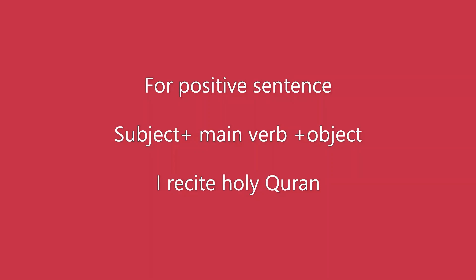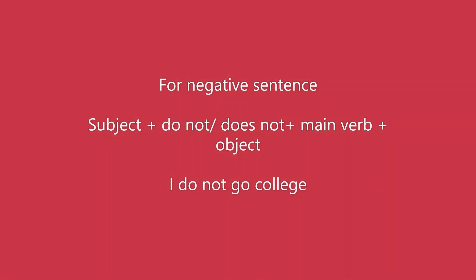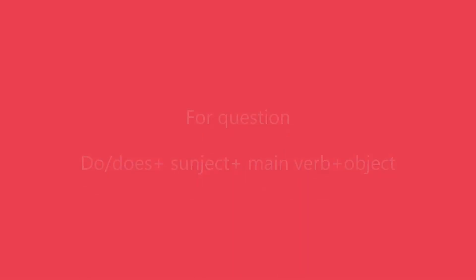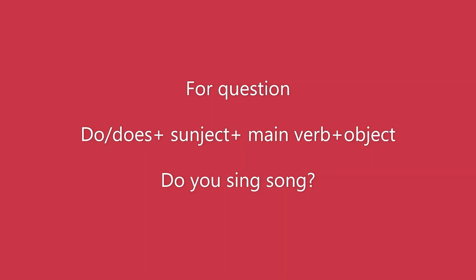For example: 'I recite the Holy Quran.' Here 'I' is the subject, 'recite' is the main verb, and 'Holy Quran' is the object. For negative sentence, the structure is: Subject plus 'do not' or 'does not' plus main verb plus object. For example: 'I do not go to college.' For questions: 'Do' or 'Does' plus subject plus main verb.